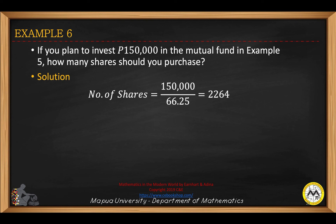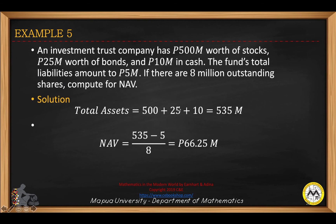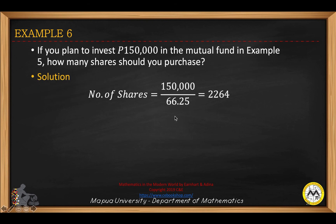If you plan to invest $150,000 in this mutual fund, how many shares should you purchase? The number of shares would be $150,000 divided by the net asset value of $66.25, which gives you 2,264 shares.